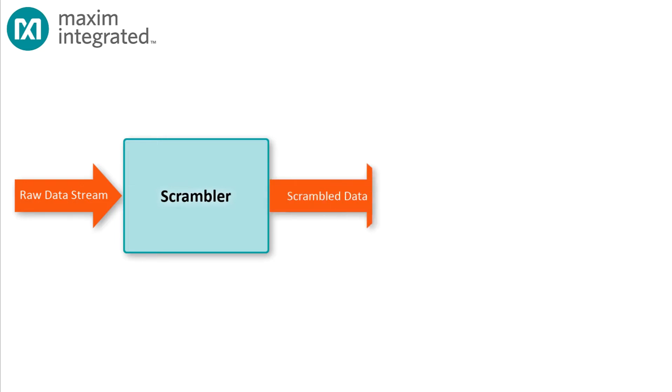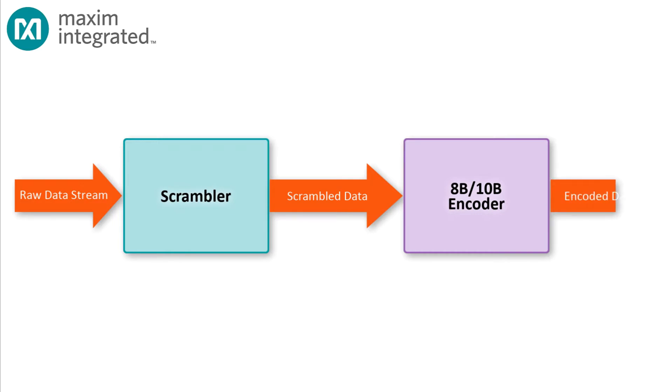Then we take the scrambled data and apply it to an 8B-10B encoder. This block takes 8-bit chunks of the scrambled data and selects 10-bit code words to represent the 8-bit chunks. And it does this in such a way that transition density and disparity requirements are met.